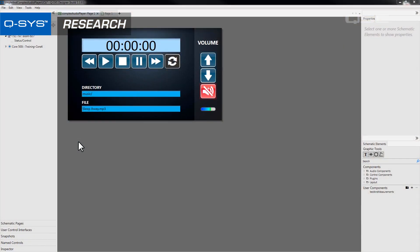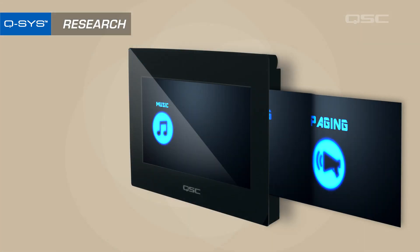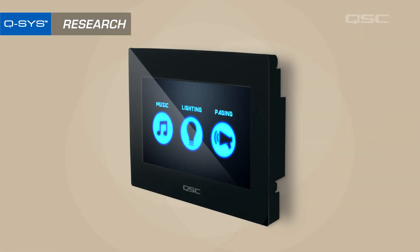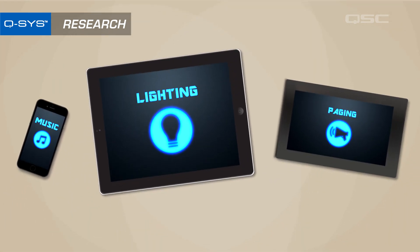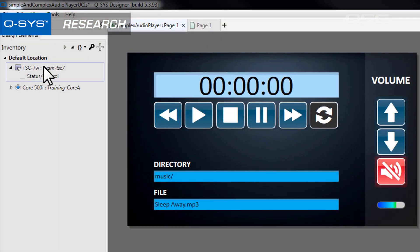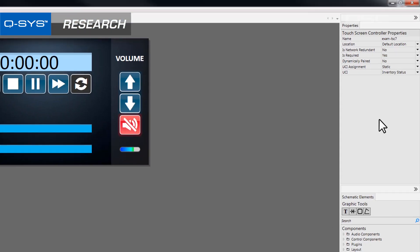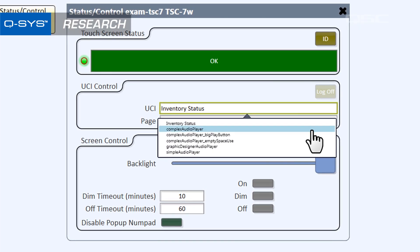You should also consider how many UCIs and touchscreens are required in the venue. If multiple people need to access the same device, you have to consider whether you should build a single UCI specific to that device that services all of their needs, or whether it might be better to build separate UCIs that they can log into individually from any device. In Q-SYS, you can change a touchscreen's properties to allow dynamic UCI assignment, which allows a user to choose between different UCIs. Knowing which method to choose will probably become more obvious once you complete the next step of design: planning.